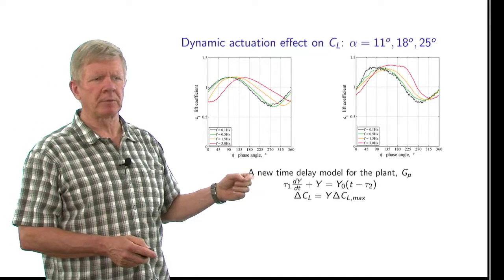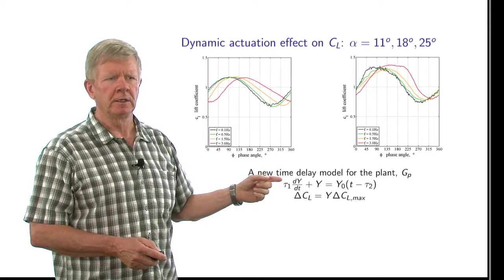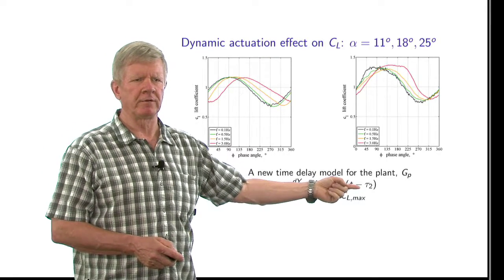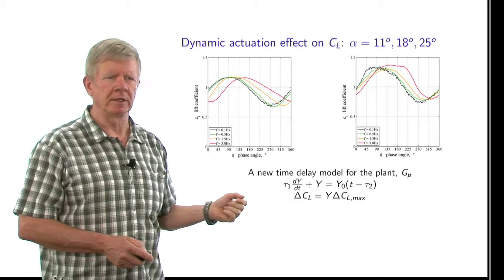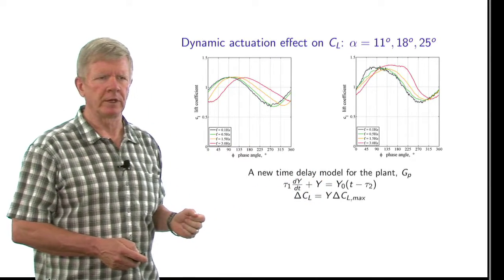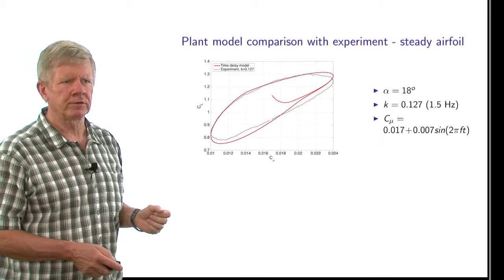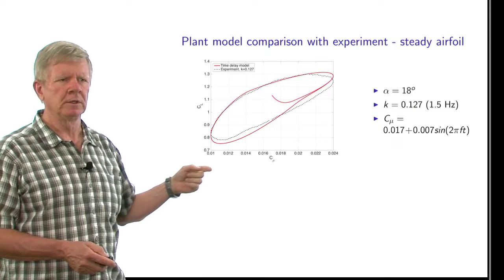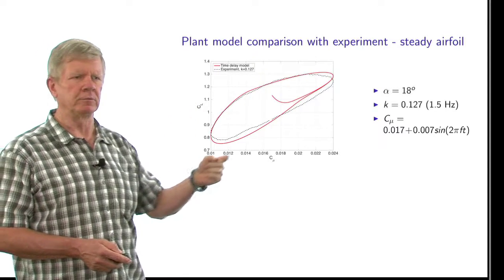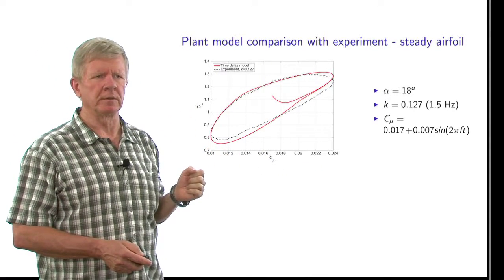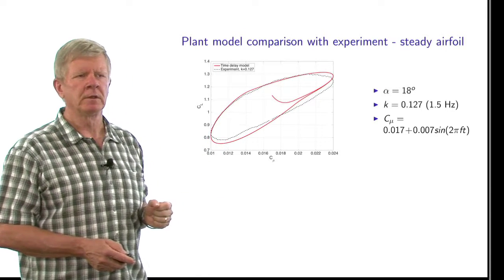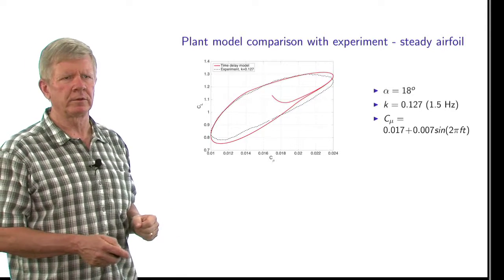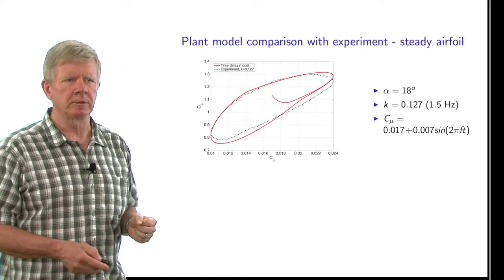So to do this, we came up with a new time delay model for the plant, which is very similar to the Gomon-Khrabrov model, except instead of multiplying Tau 2 by alpha dot, it's just a simple time delay in this static function Y0. So if we use this model, then this is how well it fits with the experimental data. Now we're plotting C L against C mu. And the red curve is the model prediction, the black dotted line is the experimentally measured data. And you see for fixed angle of attack with the sinusoidal variation in C mu, we get a reasonably good fit to the data.